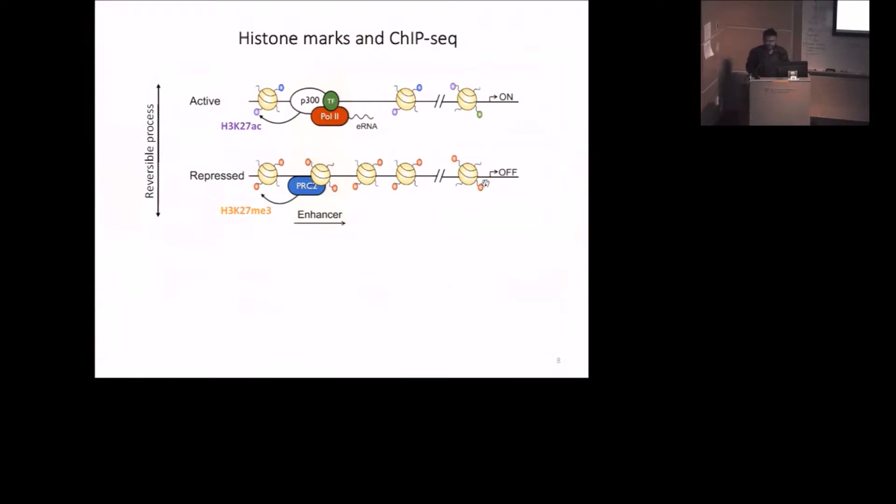The interesting thing about epigenetic modifications is they are reversible processes. We use ChIP-seq technology to identify histone-modified regions. We take DNA from modified histones. After sequencing, we map to the genome and we find a sharp peak like this after mapping the reads. We use statistical methods to identify significant genomic regions that have this histone modification compared to background noise.